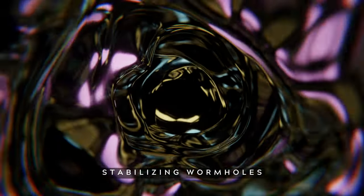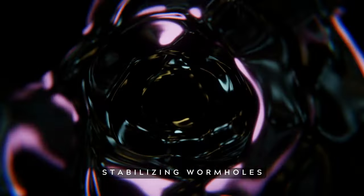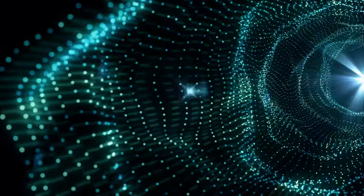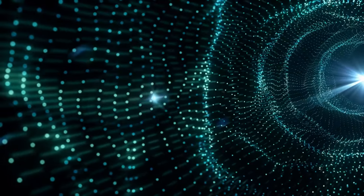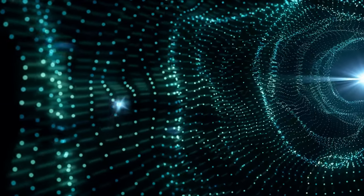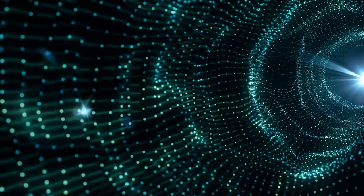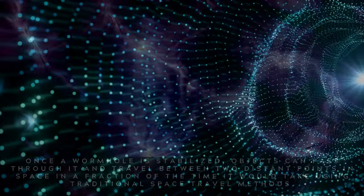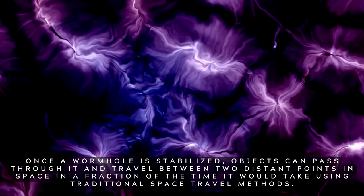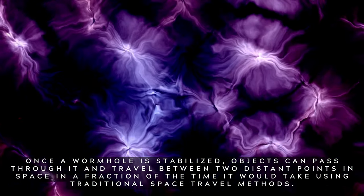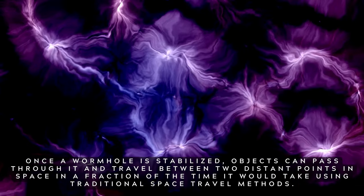Four: Stabilizing wormholes. The mouth of a wormhole is a region of intense gravitational forces that can only be stabilized by exotic matter with negative energy density. Once a wormhole is stabilized, objects can pass through it and travel between two distant points in space in a fraction of the time it would take using traditional space travel methods.